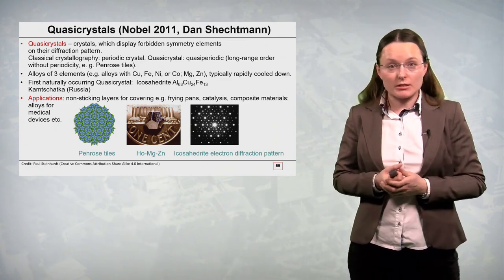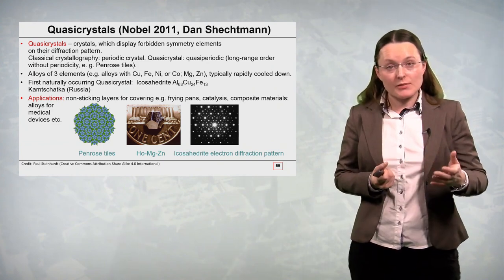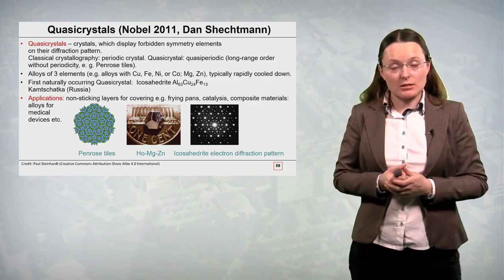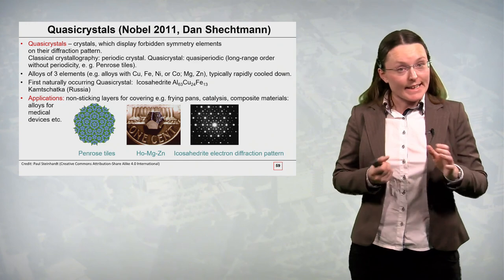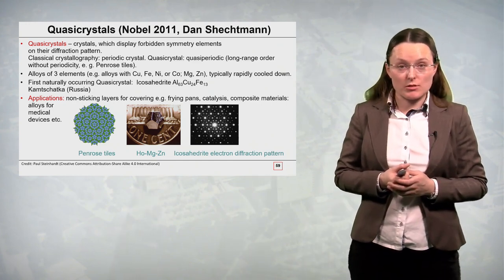So quasi-crystals are observed for instance in alloys of three elements. For instance copper, iron, nickel or cobalt, magnesium, zinc. And typically these alloys are rapidly cooled down so that we can obtain the quasi-crystalline phase. Later on even the first naturally occurring quasi-crystal was detected.